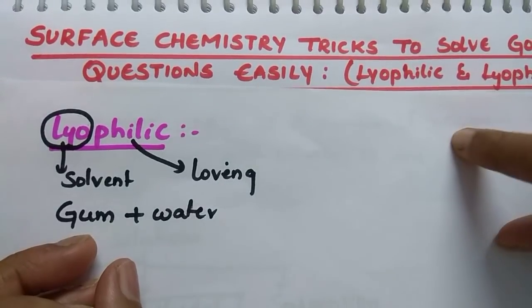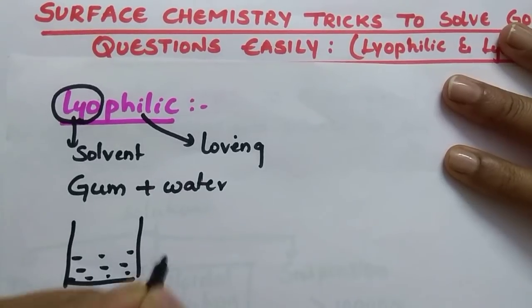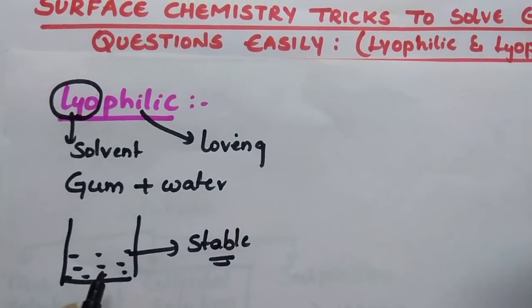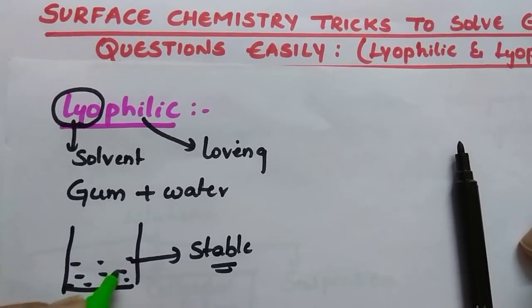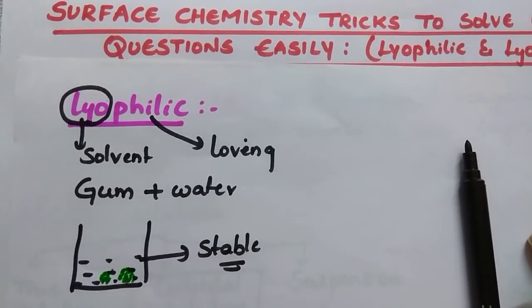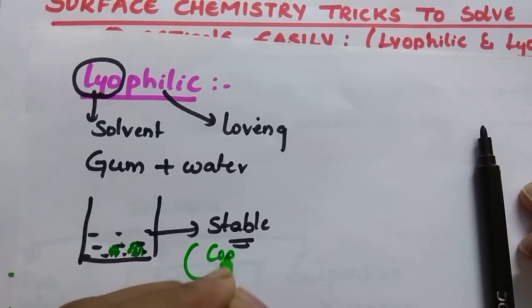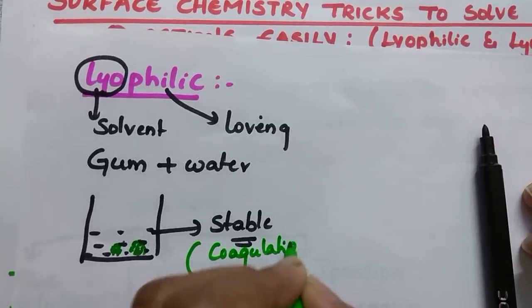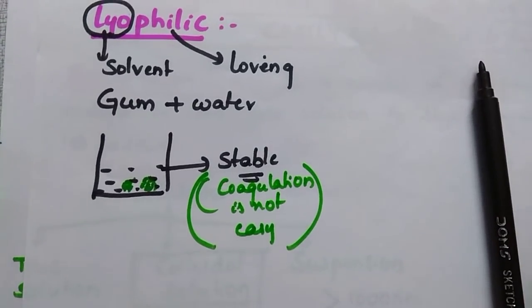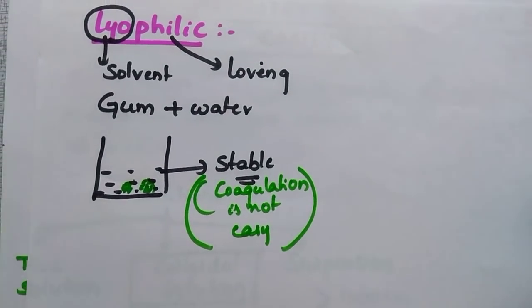What is colloidal solution? The particle ranges between 1 nanometer to 1000 nanometer. Suppose if you dissolved gum in water and got the gum solution, this solution is stable in nature. For long months if you keep the solution as it is, the gum stays good - it won't form any precipitate. Precipitate means these molecules combine together and form an aggregation. Lumps of molecules form in the solution - we call that a precipitate or coagulation. Coagulation is not easy here because these solutions are stable in nature.